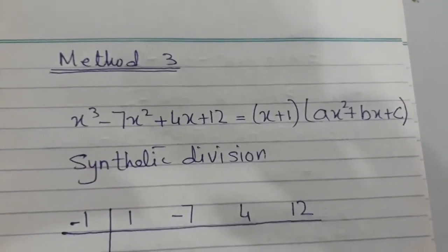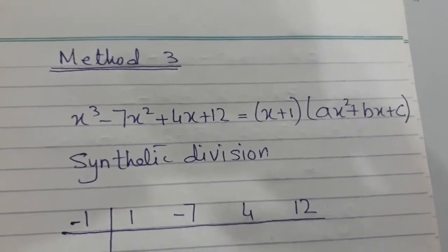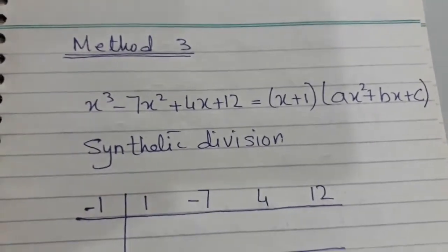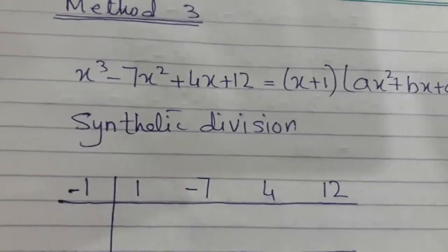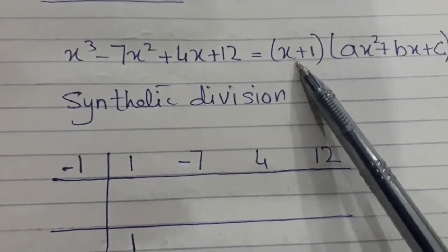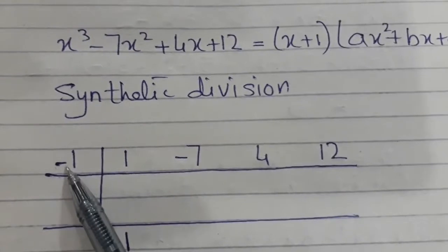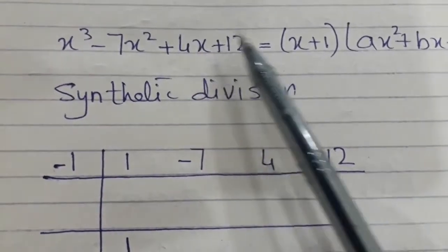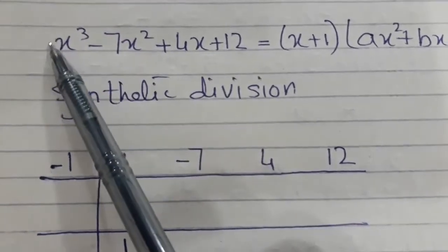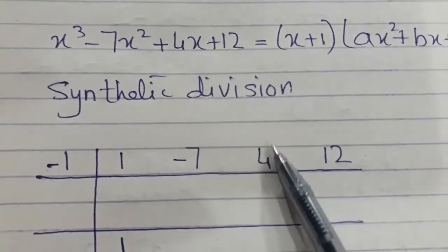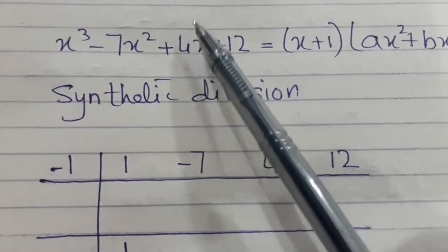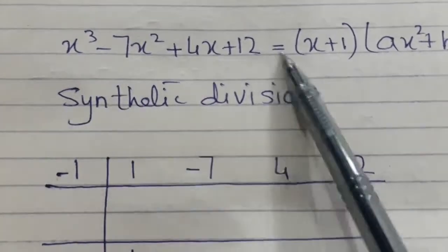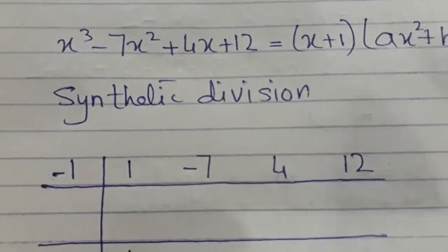Now we solve the same cubic equation by synthetic division — my personal favourite, because it's a shortcut of long division where we only work with coefficients and forget the variables. The linear factor is x + 1, so the root is minus 1. I write the root here and list all coefficients in descending order of x: 1, minus 7, 4, 12. If any term is missing, write zero in its place.